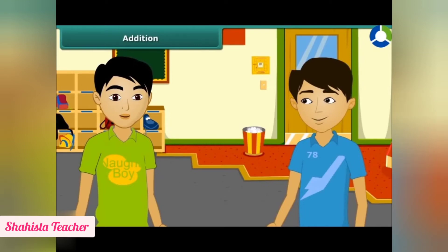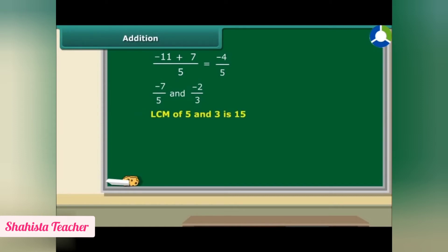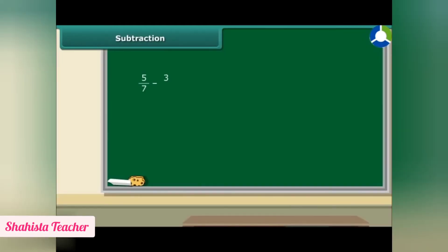To add rational numbers: if the denominators are the same, we just add the numerators. For example, -11/5 + 7/5 = (-11 + 7)/5 = -4/5. If the denominators are not the same, we first find the LCM of the denominators. Here the LCM is 15, so -7/5 becomes -21/15 and -2/3 becomes -10/15, then we add the two rational numbers. For subtraction, when denominators are the same, we subtract the numerators and keep the denominator the same.